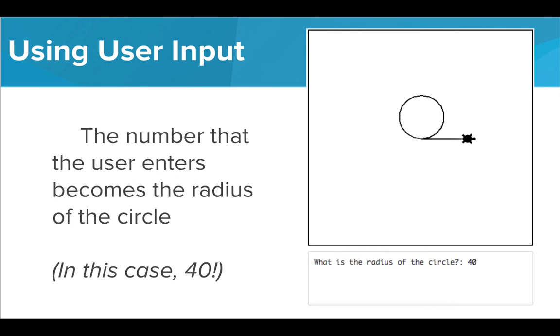The output of our code is a circle with a radius that was specified by the user. Tracy then moves forward the diameter of the circle. Let's take a look at how we can use user input in Tracy programs.